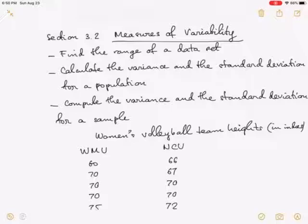Why do we need to talk about variability? Because there are some sets of data that can have the same measures of centers. They have the same mean, mode, and median, but the spread of the data or the measure of dispersion are not the same. Let's take the following example. I give you here a table of the heights in inches of the players of two volleyball teams. One is the Western Massachusetts University and the other is Northern Connecticut University.